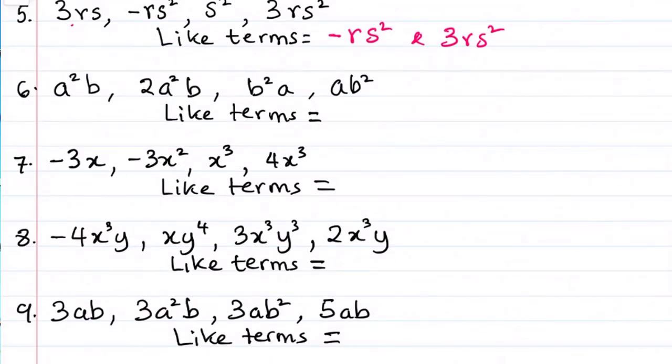Number 6. We have a squared b, 2a squared b, b squared a, ab squared. So you can see the difference here.